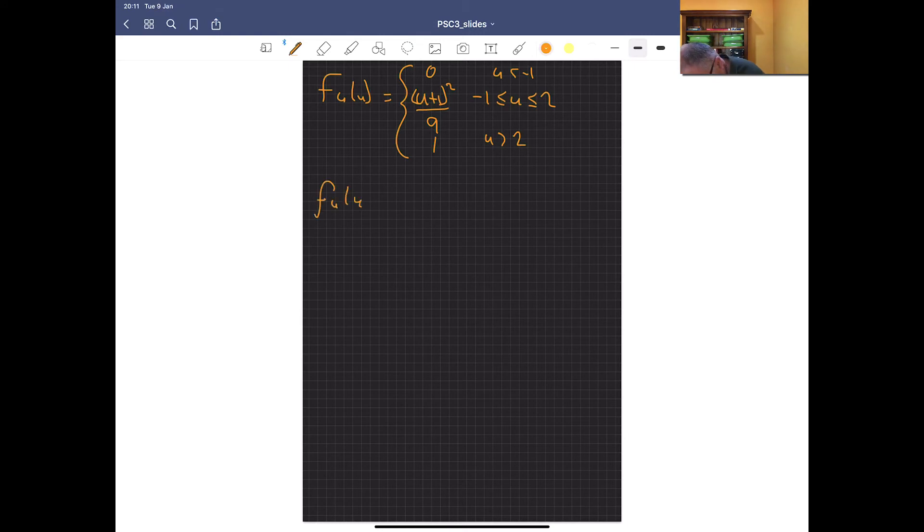So now our f of U, our PDF, is going to be d over dU, F of U. So if I differentiate that, I'm going to get 2, U plus 1 over 9, minus 1 less than U less than 2, and 0 elsewhere.